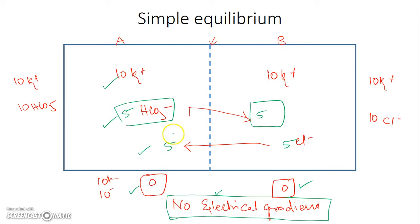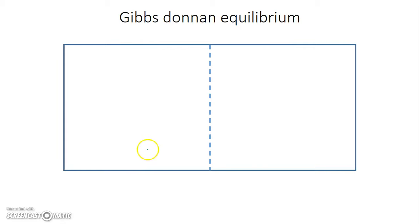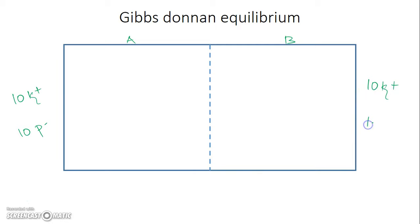This is what happens in simple equilibrium: when a membrane is permeable to all the ions, all the ions equally distribute and there is no electrical gradient. But this entire equilibrium changes if we add one non-permeable ion on one side. Let us take two new compartments A and B, and this time add 10 potassium ions and 10 protein ions (P-) on side A.